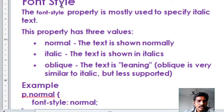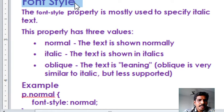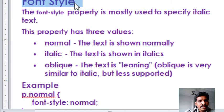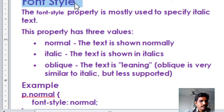Coming to the second property — font style. The font style property determines how the text is displayed, such as in italic format. Normally, text formatting includes bold, italic, and underline. Underline is handled under text property, while bold and italic are found under font style property.